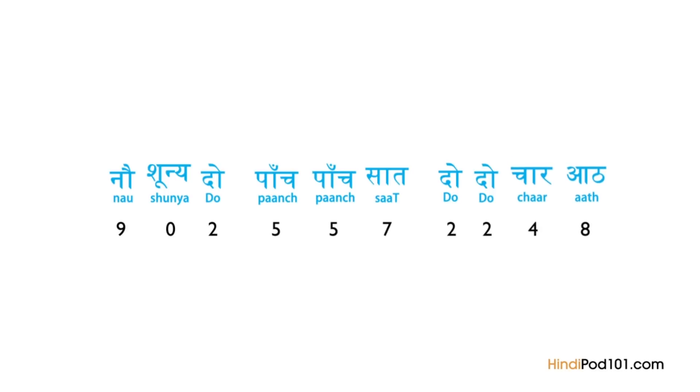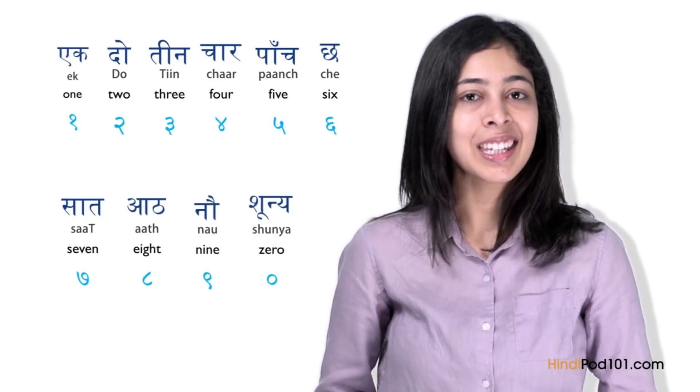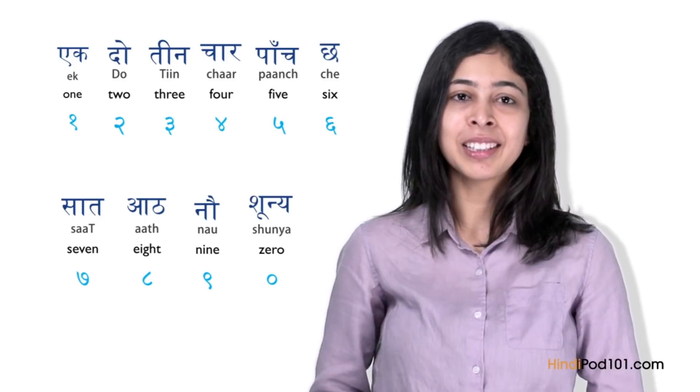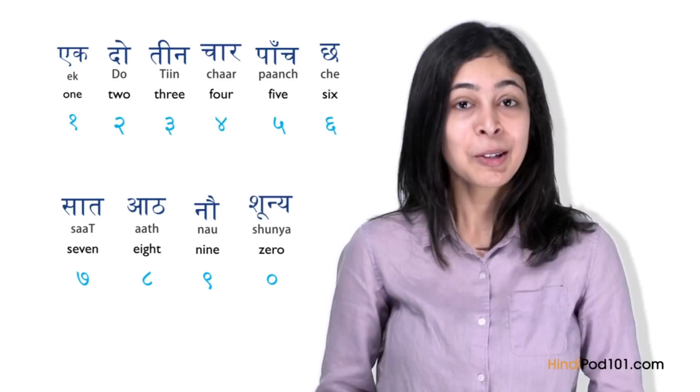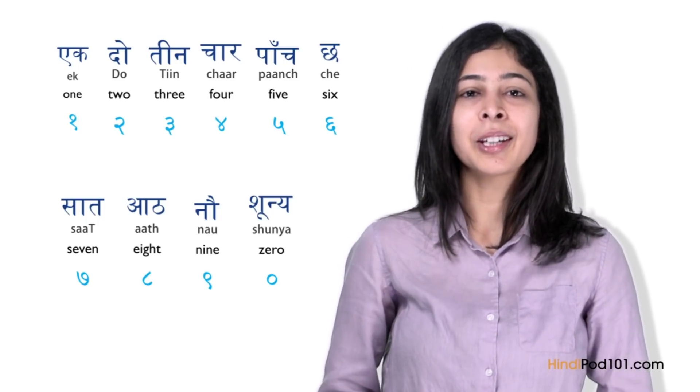Did you know that in Hindi, numbers have their own Devanagari script? They don't look like the numbers we're used to seeing in the Western world, but they're quite similar because the Western numeral system is actually a modified version of the Hindi numeral system. So with just a little more effort, you can not only say the numbers in Hindi — you'll be able to read them as well. Do you know the Hindi word for 100? In the next lesson, we're going to learn numbers from 10 to 100. Your task now is to practice the numbers from 1 to 10.